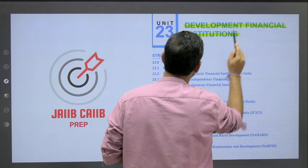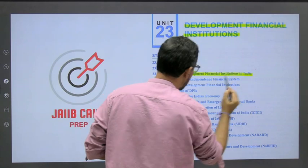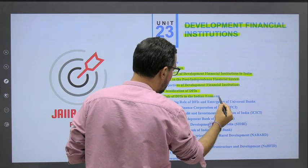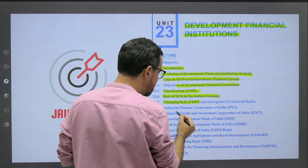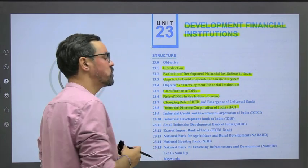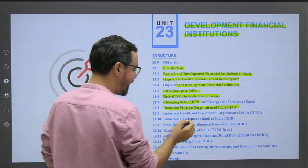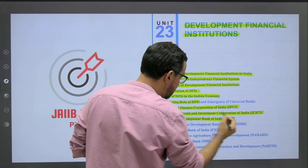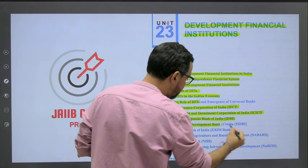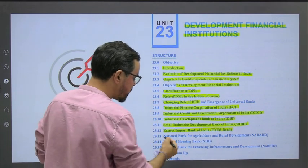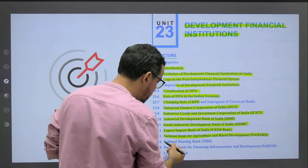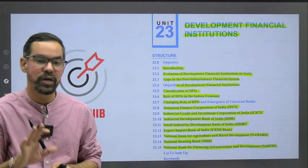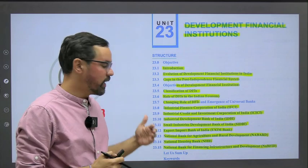Unit Number 23 covers Development Financial Institutions: basic introduction, evolution of DFIs, gap in post-independence financial system, objectives of DFIs, classification, role in Indian economy, and changing role of DFIs. We have Industrial Finance Corporation of India - the first DFI in India - established in 1948, then ICICI, IDBI, SIDBI, EXIM Bank, NABARD, NHB, and the newly built NaBFID - National Bank for Financing Infrastructure and Development.